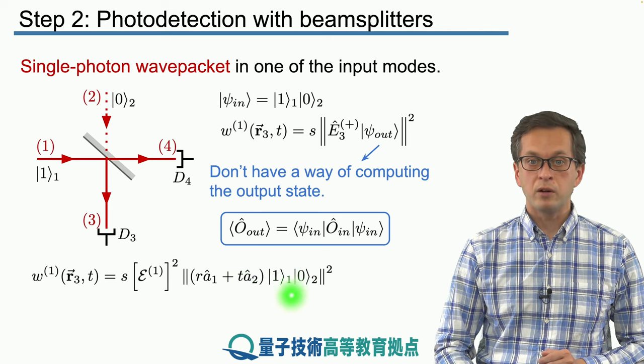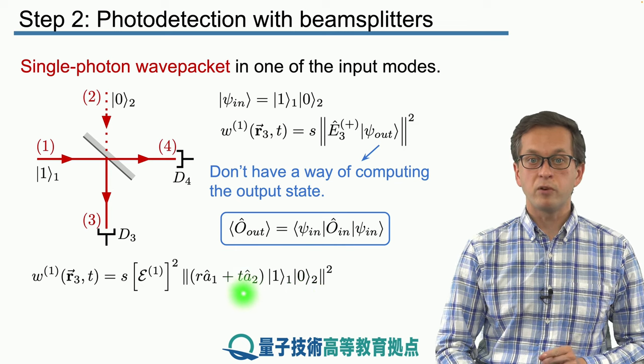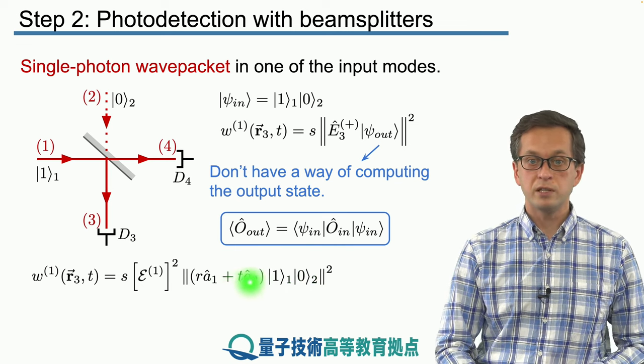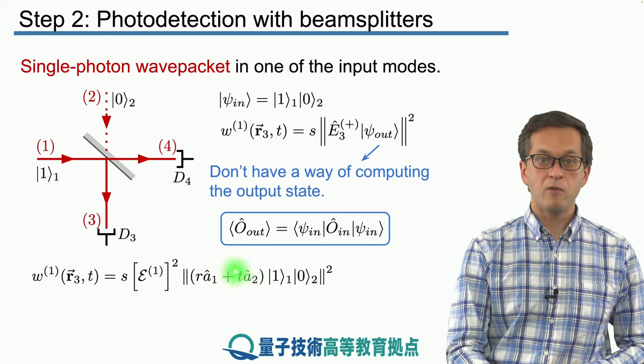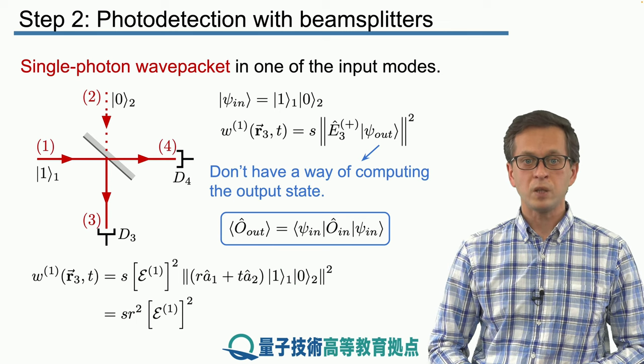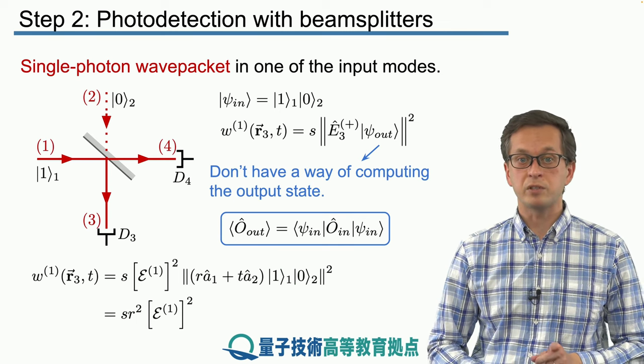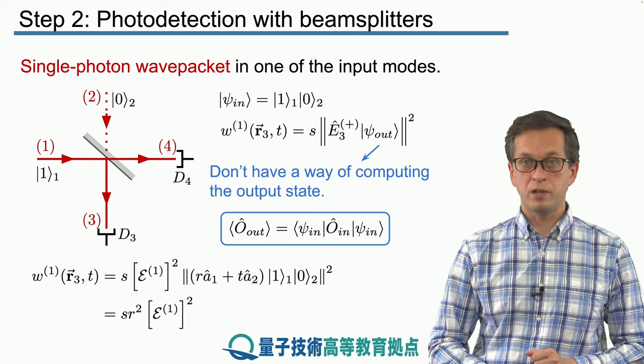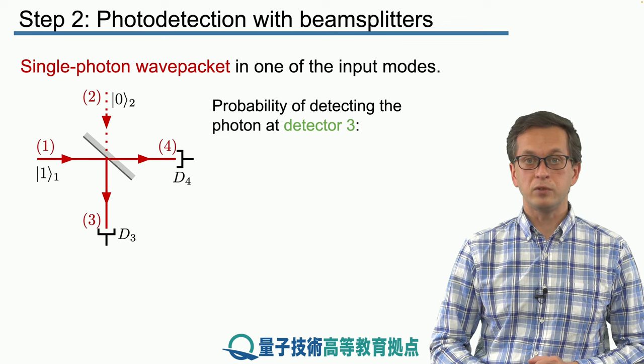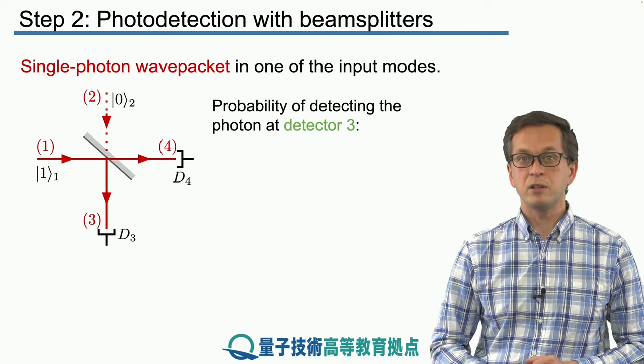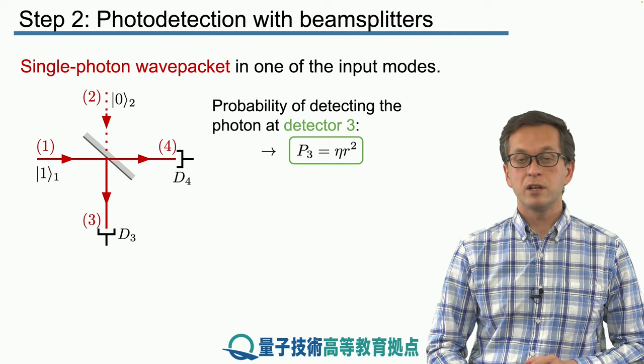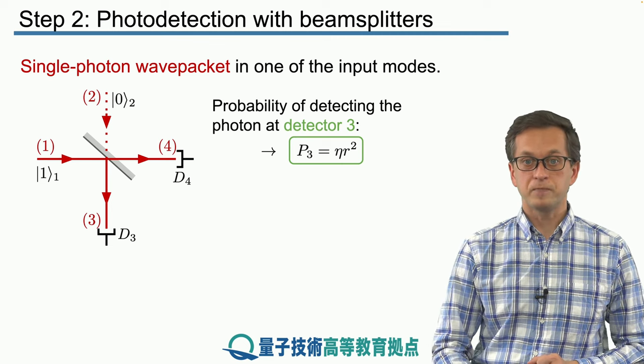Now, our input of mode 2 is vacuum. Therefore, operating on it with A2 gives us 0. So this term cancels, and all we are left with is A1 acting on one photon state in mode 1. Meaning that our W1 is equal to S times R squared times the one photon amplitude squared. And the total probability of detecting a photon at detector 3 is then given in terms of the quantum efficiency as P3 equals eta times the reflection coefficient R squared.